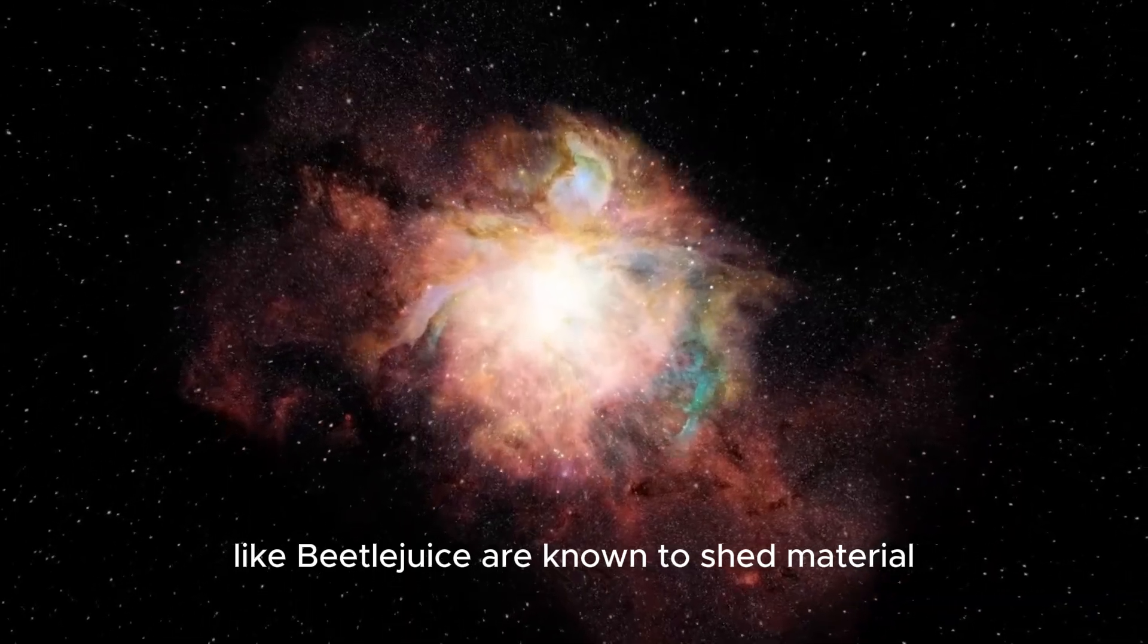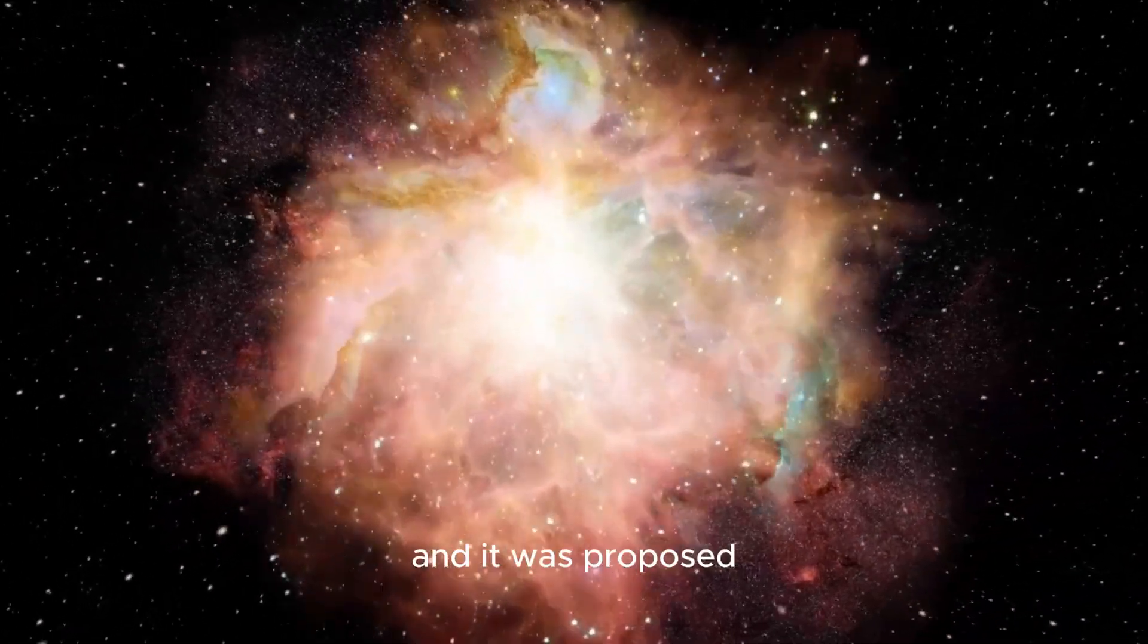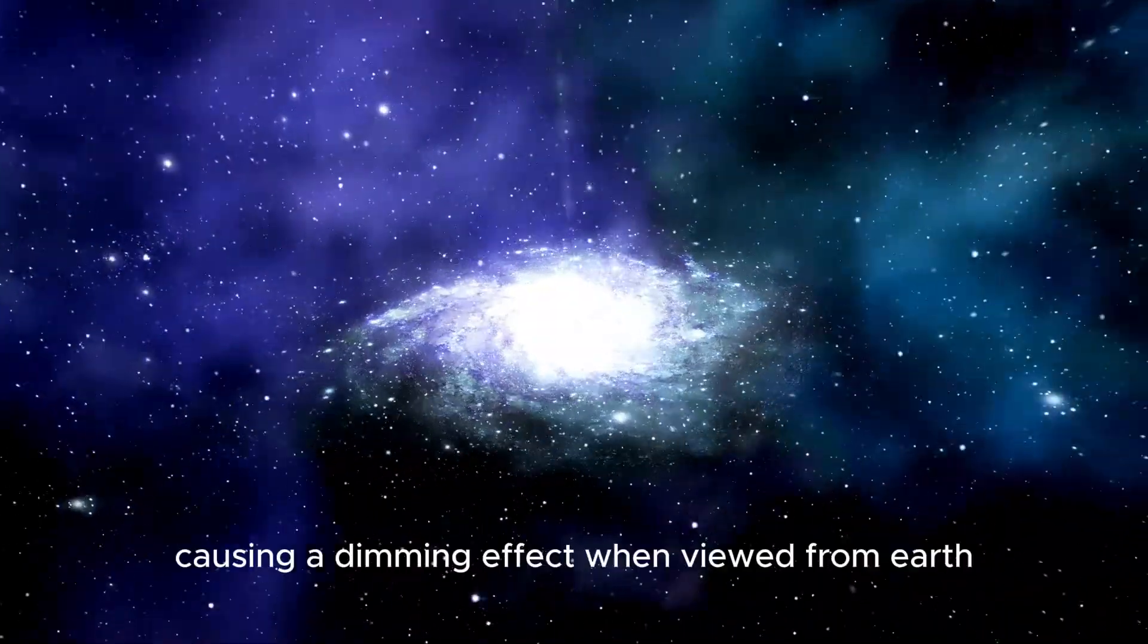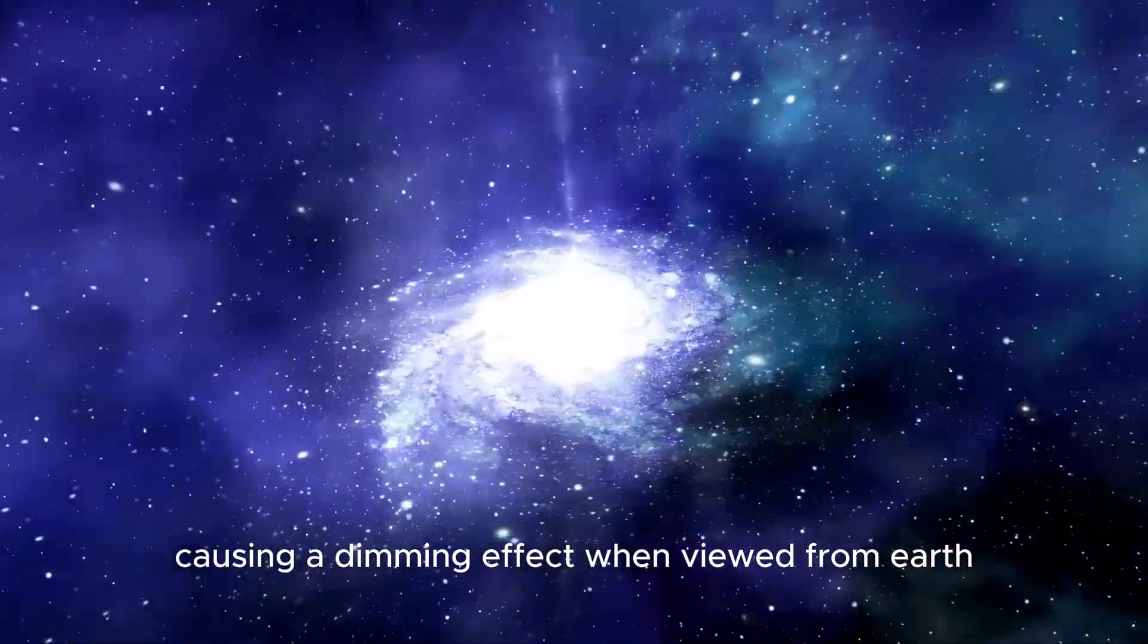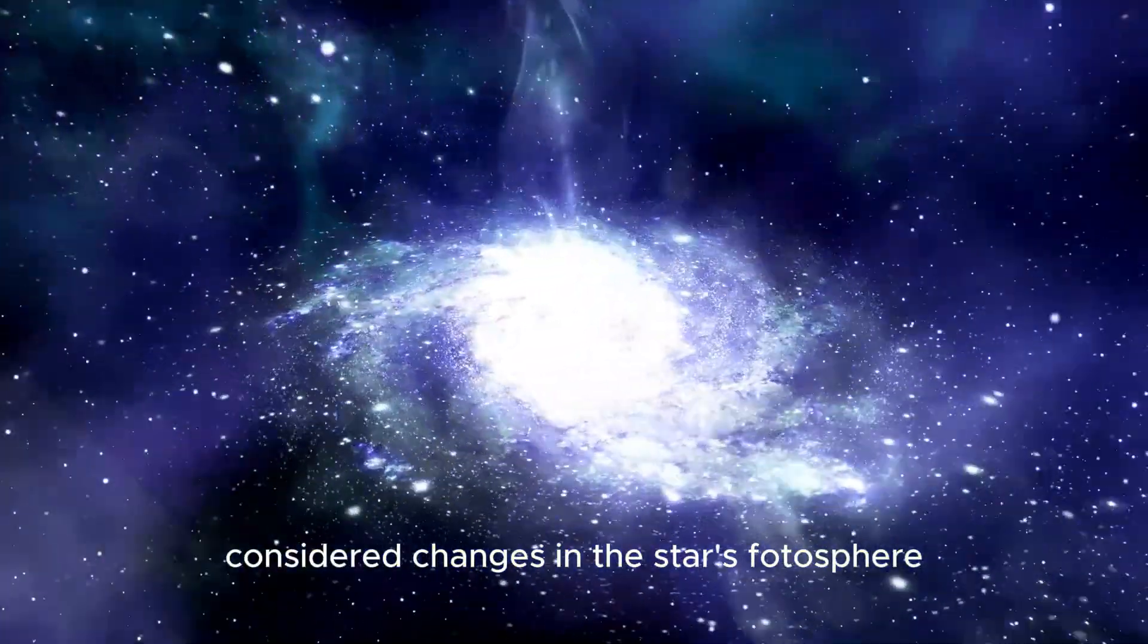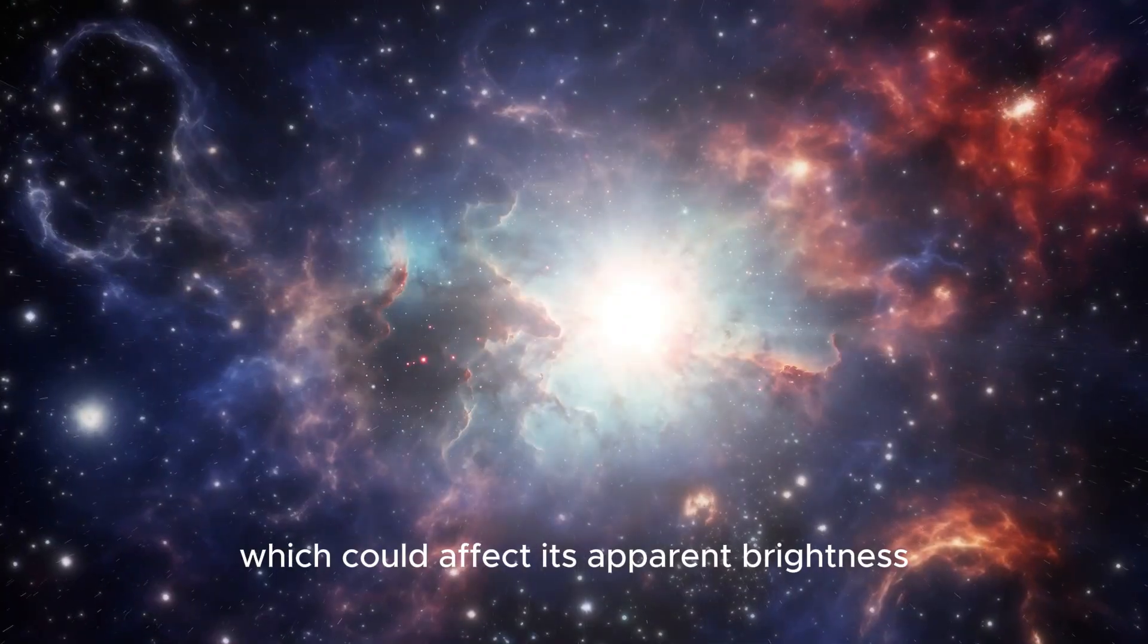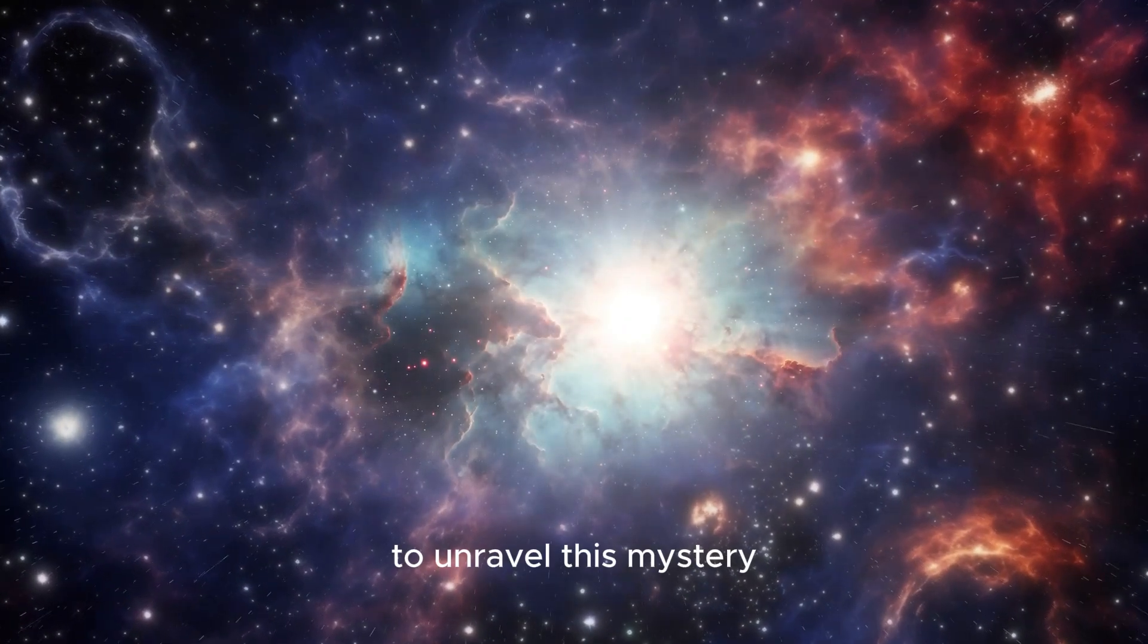Red supergiants like Betelgeuse are known to shed material, and it was proposed that this material could form a dense dust cloud, causing a dimming effect when viewed from Earth. Another explanation considered changes in the star's photosphere, the visible surface layer, which could affect its apparent brightness.